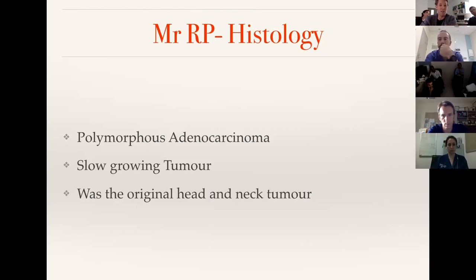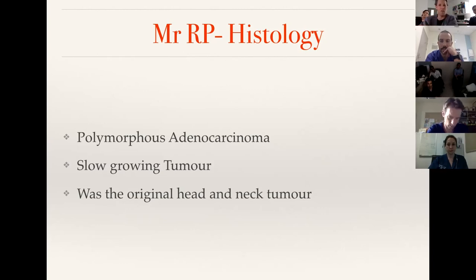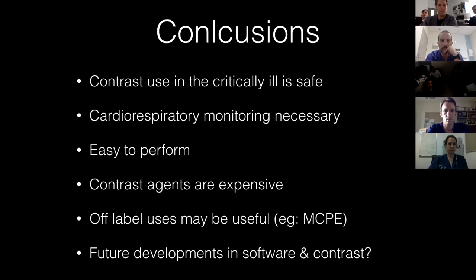The mass turned out to be a polymorphous adenocarcinoma — a slow-growing tumor. The patient had a history of head and neck tumors, possibly related. The lung lesion was biopsied; they decided to leave the RV and other lesions. For RV masses in general, the differential is either thrombus or infection — and if it's not infection, it's probably thrombus. After that, it's still probably thrombus.